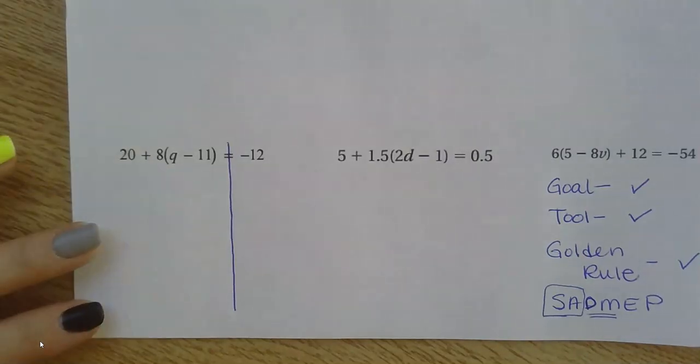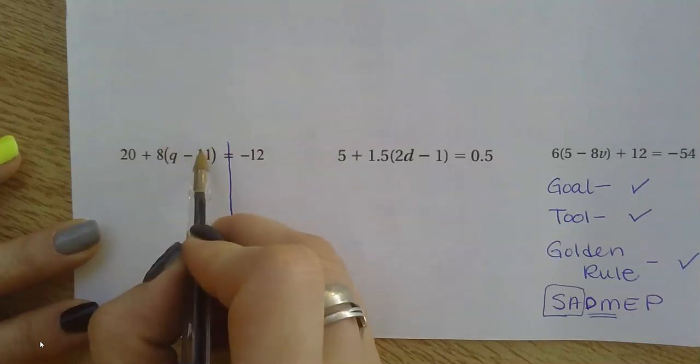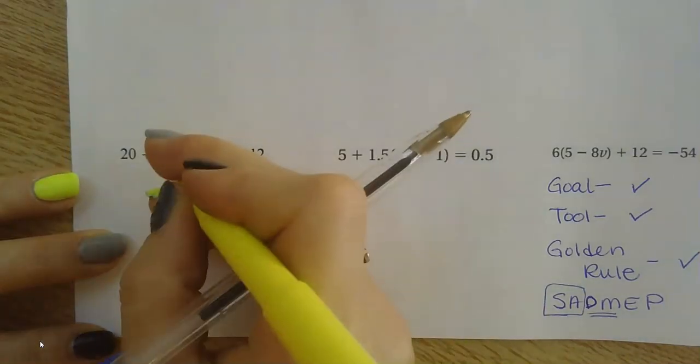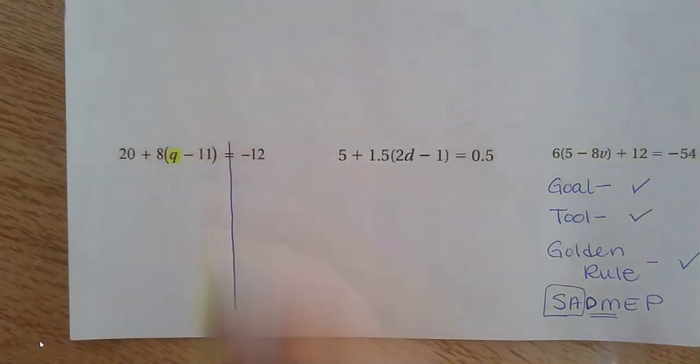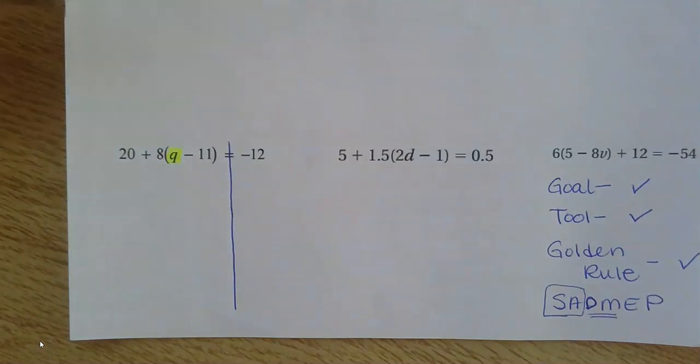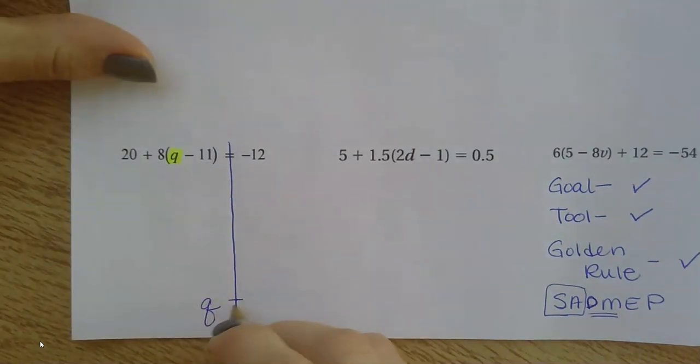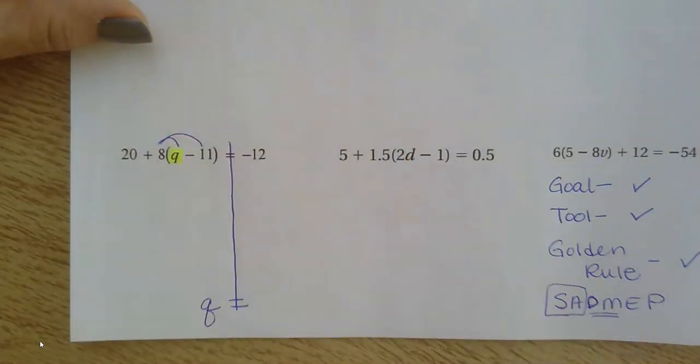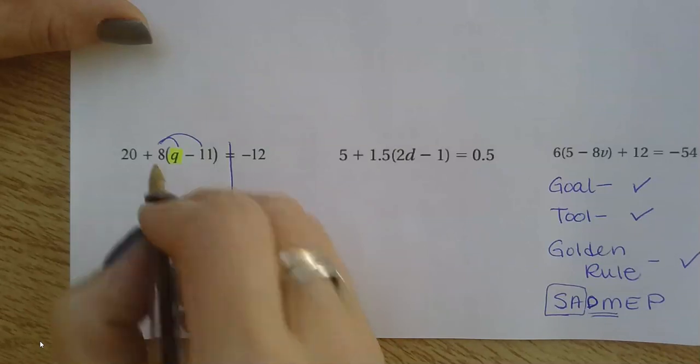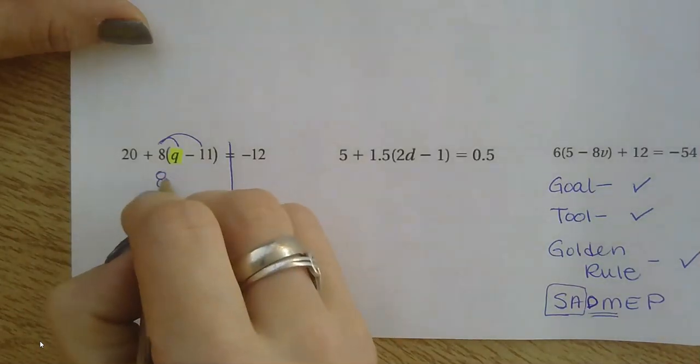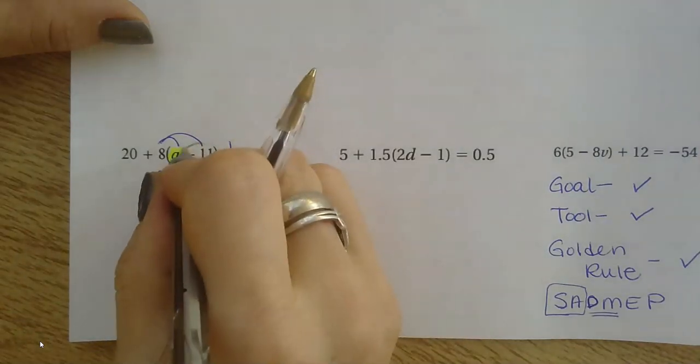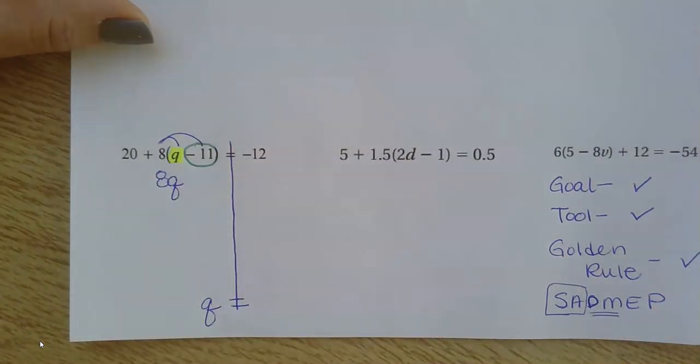The key is that we do have to distribute first. I can't start canceling things out until after I've distributed. So here's my variable. I'm trying to get a Q by itself. I want to end up with Q all alone at the bottom. But I see that this 8 needs to be distributed, so I'm going to multiply that out. 8 times Q is 8Q, and 8 times negative 11 is negative 88.